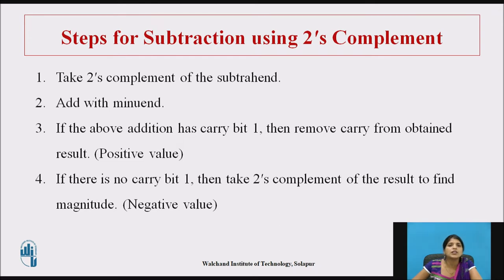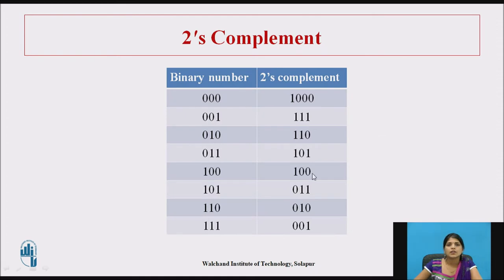Now we will solve examples. Some binary numbers are given and we have to find the 2's complement for each. The left-hand side shows the binary numbers and the right-hand side shows the 2's complement of each number.